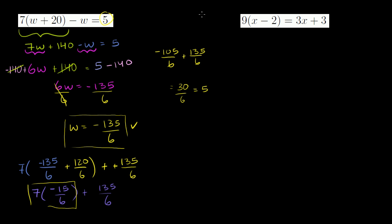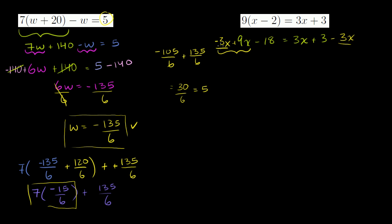Now let's do the next problem. I like to distribute out the 9. So you get 9x minus 18 — just distributed the 9 — is equal to 3x + 3. Now we want to get the x terms together on the left-hand side, so let's get rid of this 3x on the right-hand side by subtracting 3x from both sides. The left-hand side: 9x minus 3x equals 6x, and you have minus 18 equals 3x minus 3x — those cancel out — leaving just the 3.